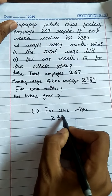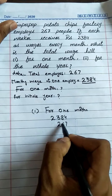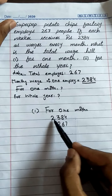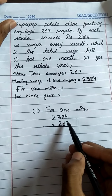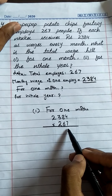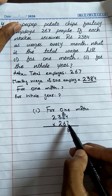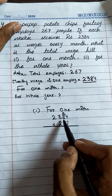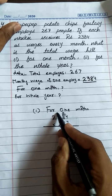We write 2384 on top and multiply it by 267. Starting from the right side: 7 × 4 = 28, write 8 carry 2. 7 × 8 = 56, add 2 = 58, write 8 carry 5. 7 × 3 = 21, add 5 = 26, write 6 carry 2. 7 × 2 = 14, add 2 = 16.